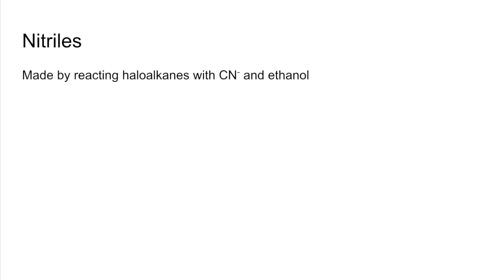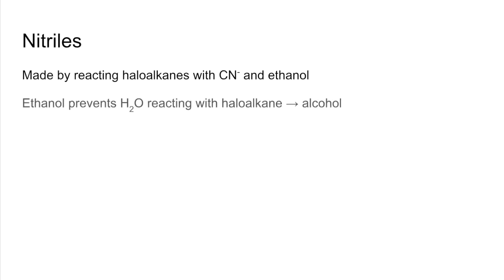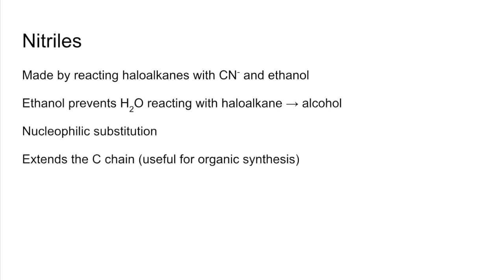We'll focus on nitriles now and then move on to hydroxynitriles. Nitriles can be made by reacting haloalkanes with cyanide ions — the solvent must be ethanol. The ethanol prevents water reacting with the haloalkane, which would give an alcohol instead. The mechanism is nucleophilic substitution, and it's very useful for organic synthesis because it extends the carbon chain. For example, butanenitrile has four carbons, but one of those comes from the cyanide ion.